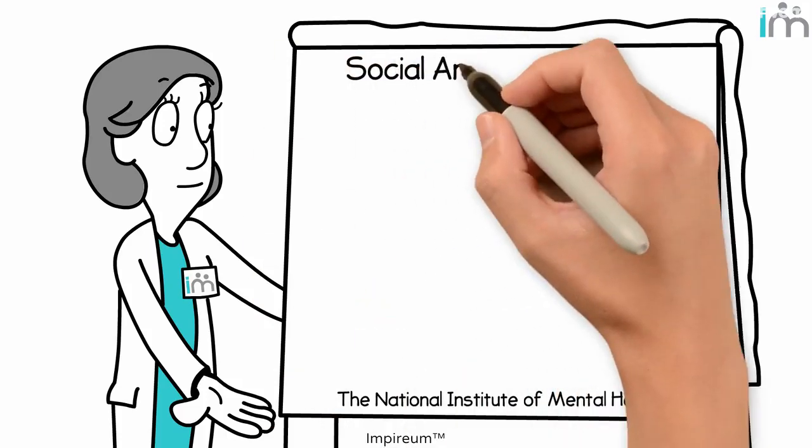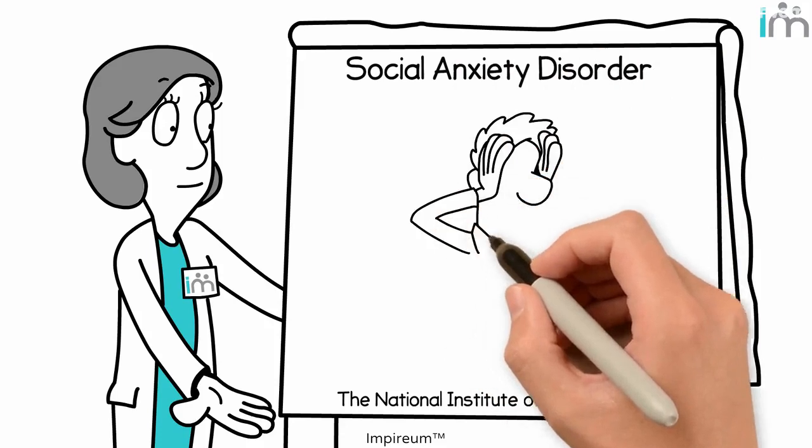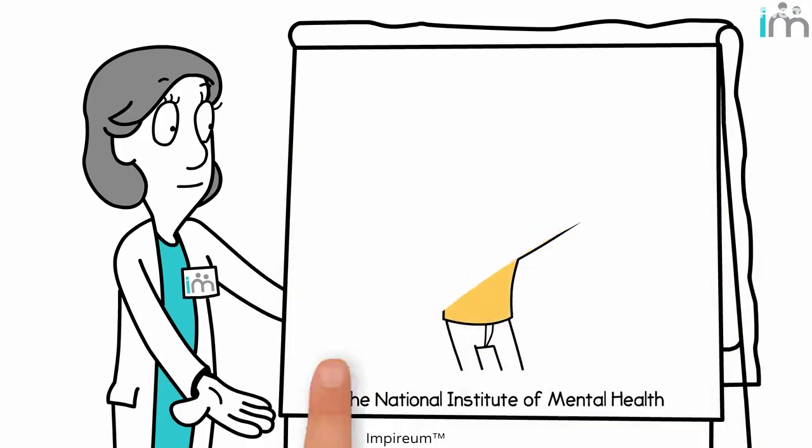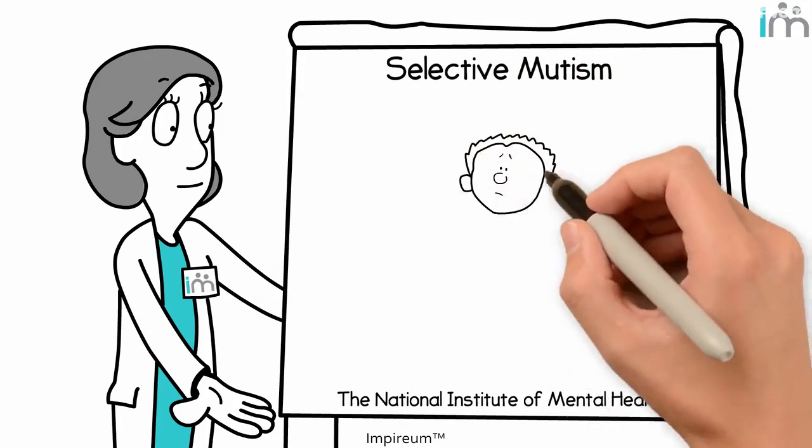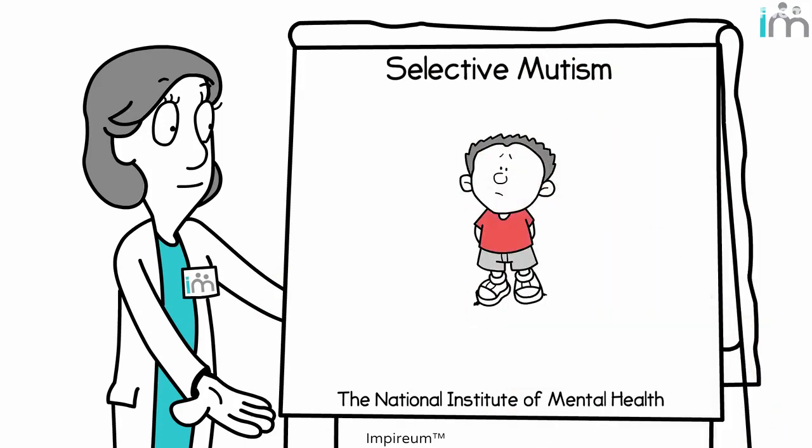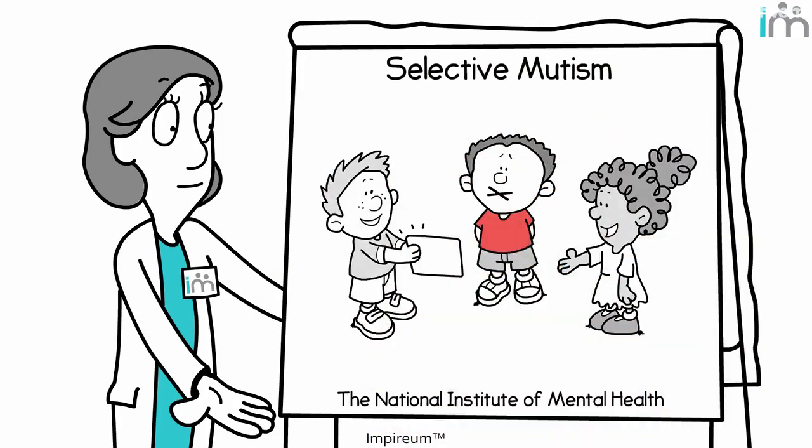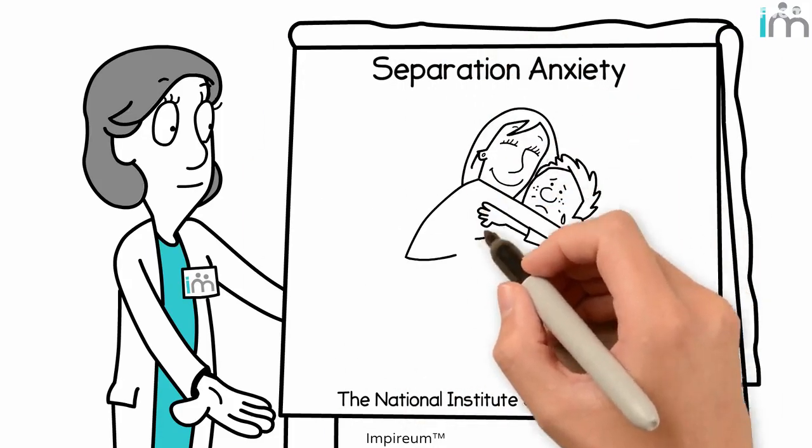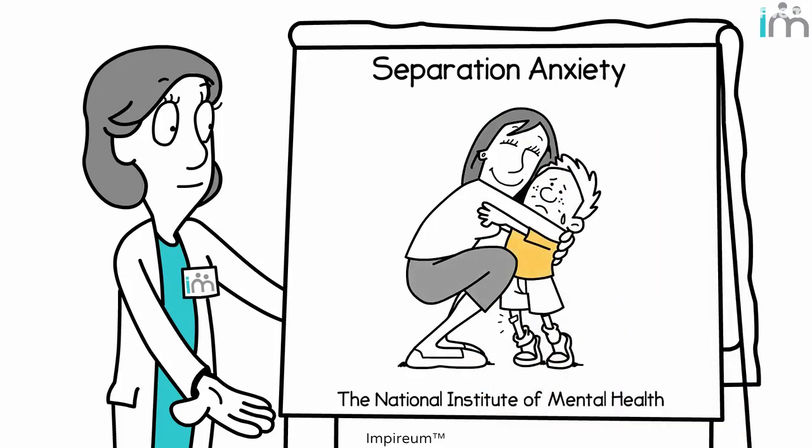Social anxiety disorder, which, in a nutshell, is like extreme shyness that creates severe inner distress. Selective mutism, a relatively rare situational disorder where the person can't talk around certain others. Separation anxiety, which often affects young kids who worry about being away from their parents.